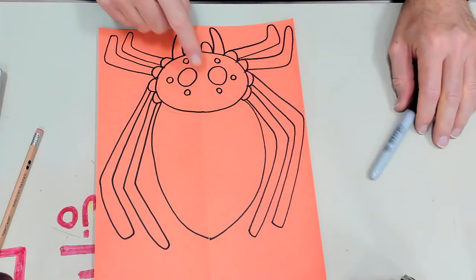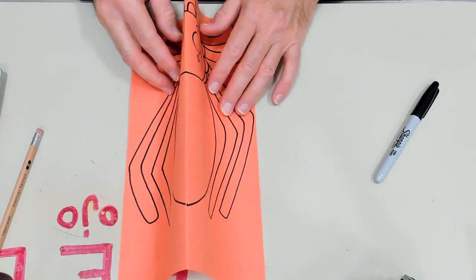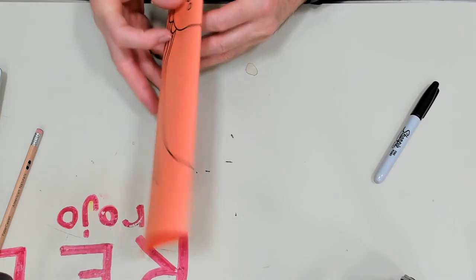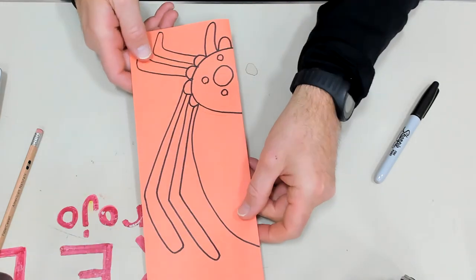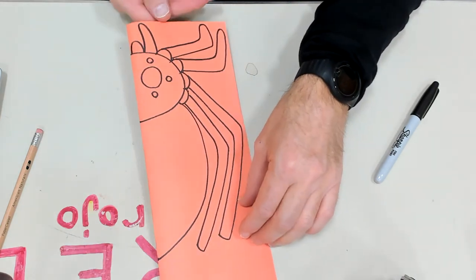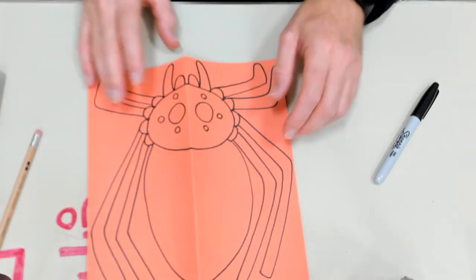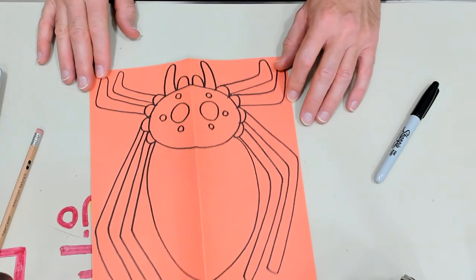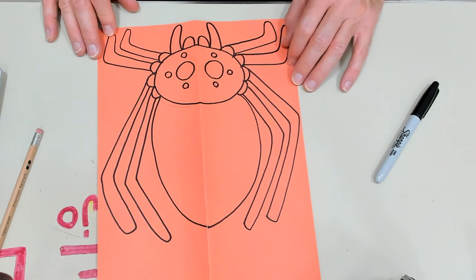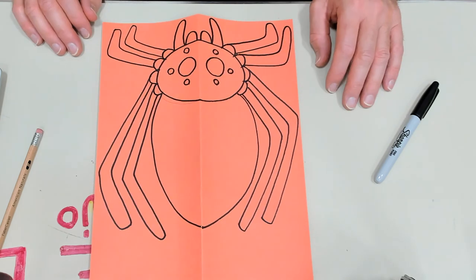Now remember this line down the middle. If I fold my spider in half, it should be almost the same on both sides. So there's one side, there's the other side. It's not exact, but it is pretty close to being the same on both sides.